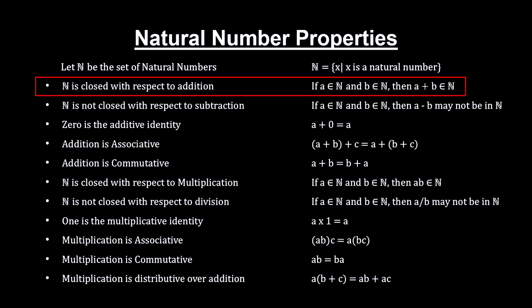Natural numbers are closed for addition and multiplication. By closed, we mean that these operations on numbers in the set produce numbers that are also in the set.